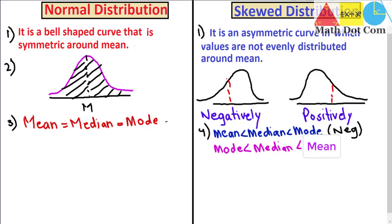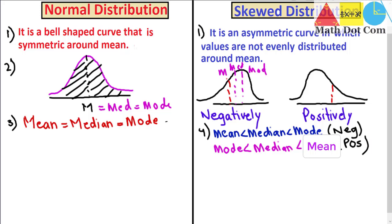In the normal distribution graph, mean equals median equals mode and all of them are at the same point. But in negatively skewed distribution, mean is at one place, then median, then mode. For positively skewed distribution, mode is less than median and median is less than mean — so we have mode first, then median, then mean. This is how they differ in mean, median, and mode.